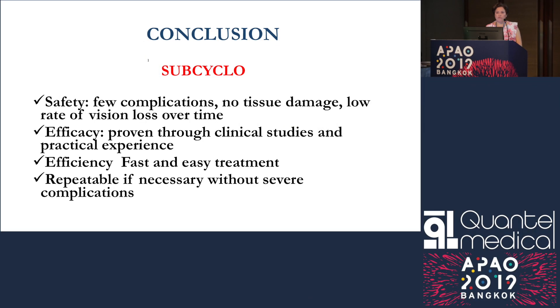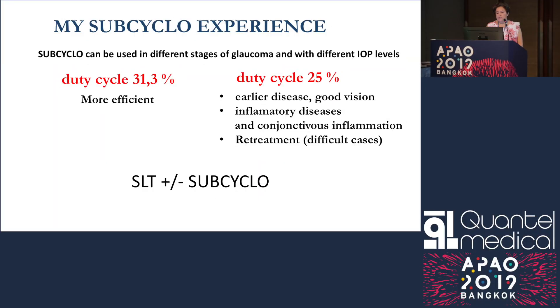In conclusion, SubCyclo seems to be an effective way to control IOP with fewer complications, and it can be repeated without severe complications. In my experience, I use it in different stages of glaucoma with different IOP levels. It is more efficient using a duty cycle of 31.3%, but I tend to use the reduced duty cycle of 25% in cases presenting complications or inflammatory disease.